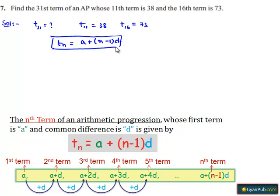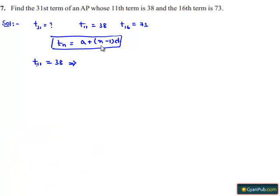Let us utilize t11 = 38. Substituting n = 11 in the formula, we get a + (11-1)d = 38, which implies a + 10d = 38. Let this be equation number 1.